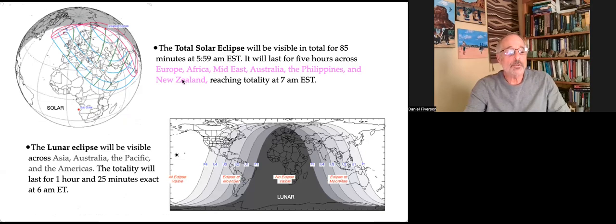The lunar eclipse will be visible across Asia, Australia, the Pacific, and the Americas. The totality will last for an hour and 25 minutes and will be exact at 6 a.m. Eastern Time.